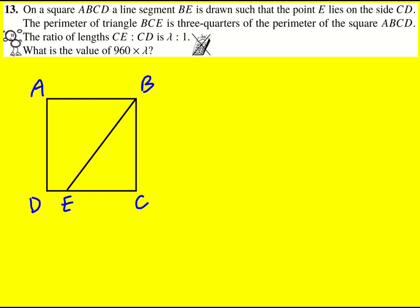And then we're told that the perimeter of triangle BCE is three quarters of the perimeter of the square and the ratio of length CE to CD is lambda to one. So it's a ratio, but without loss of generality I can basically say that that length is lambda. It's just going to be a multiple of lambda and then CD the whole thing is going to be one.